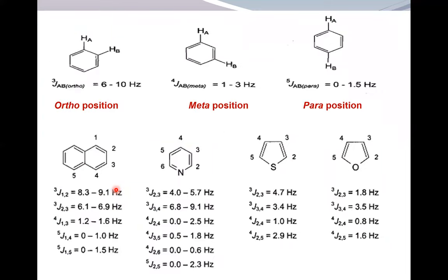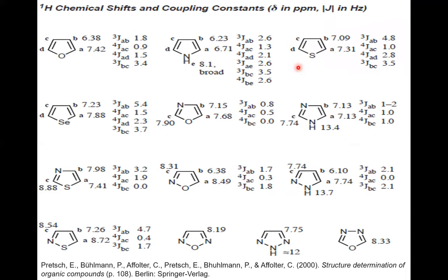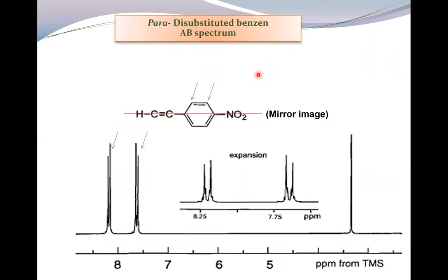Now we go to another phenomenon of coupling constants. For ortho substitution, the coupling constant is around 6 to 10 Hz. For meta coupling it is around 1-3 Hz, and for para coupling it is very, very low at about 1.5 Hz. When you see peaks with a mirror-image pattern, it means you have para substitution. Immediately draw a benzene ring with para substitution, because you get this mirror image — also called an AB spectrum. Expansion of the spectrum helps you see the peaks clearly.